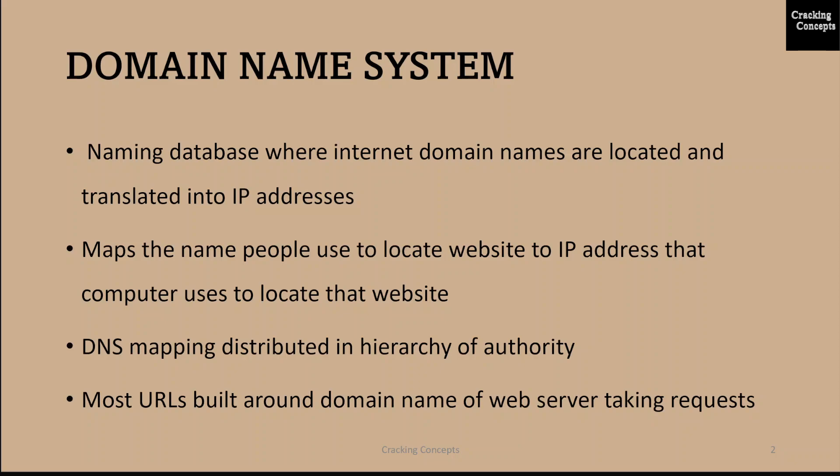DNS mapping is distributed throughout the internet in a hierarchy of authority. Access providers and enterprises, as well as governments, universities and other organizations, typically have their own assigned range of IP addresses and an assigned domain name. They also typically run DNS servers to manage the mapping of those names to those addresses. Most URLs are built around the domain name of the web server that takes the client request.